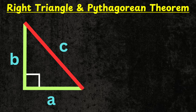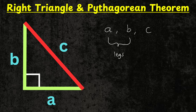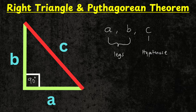Just a quick review about what a right triangle is. A right triangle is a triangle that has three sides. In this case we have side A, side B, and side C. These two sides A and B are called the legs of the triangle because they are perpendicular to each other, forming an angle of 90 degrees. And then we have side C which is called the hypotenuse. These three sides are related to each other using the Pythagorean theorem, which says the sum of the squares of the two legs — A squared plus B squared — is always equal to C squared.